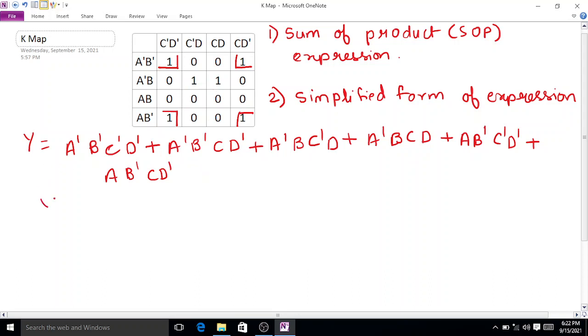So the simplified form of expression - for this part we will get B'D'. Here we can see that A is changing to A', A' is changing to A, and D' is common to all the ones, while C' is changing to C. So we can eliminate A and C. Then we form the pair for these remaining two ones.